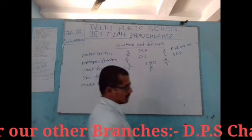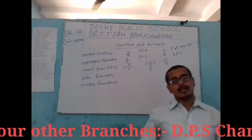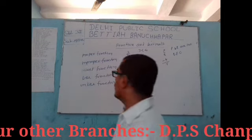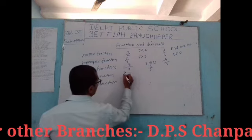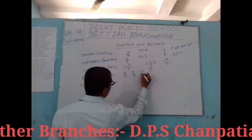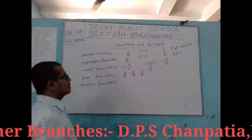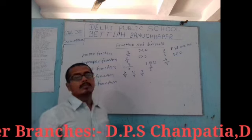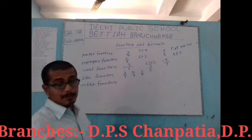Next is like fraction. If the denominators of the fractions are the same, they are called like fractions. For example, 3 by 5, 4 by 5, and 7 by 5 — in all these fractions the denominator is the same. Such fractions are called like fractions.